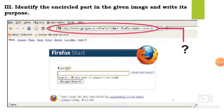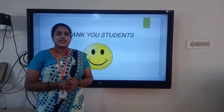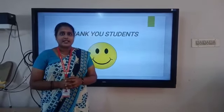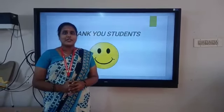Third activity: you have to identify the encircled part shown in the image and write its purpose. Read the lesson properly, go through it, and using the book, you can finish these worksheets. Kindly do this worksheet in your activity notebook. So in today's class, we have revised the concepts which we learned before. I hope you all understood the concepts very well. Thank you, students.